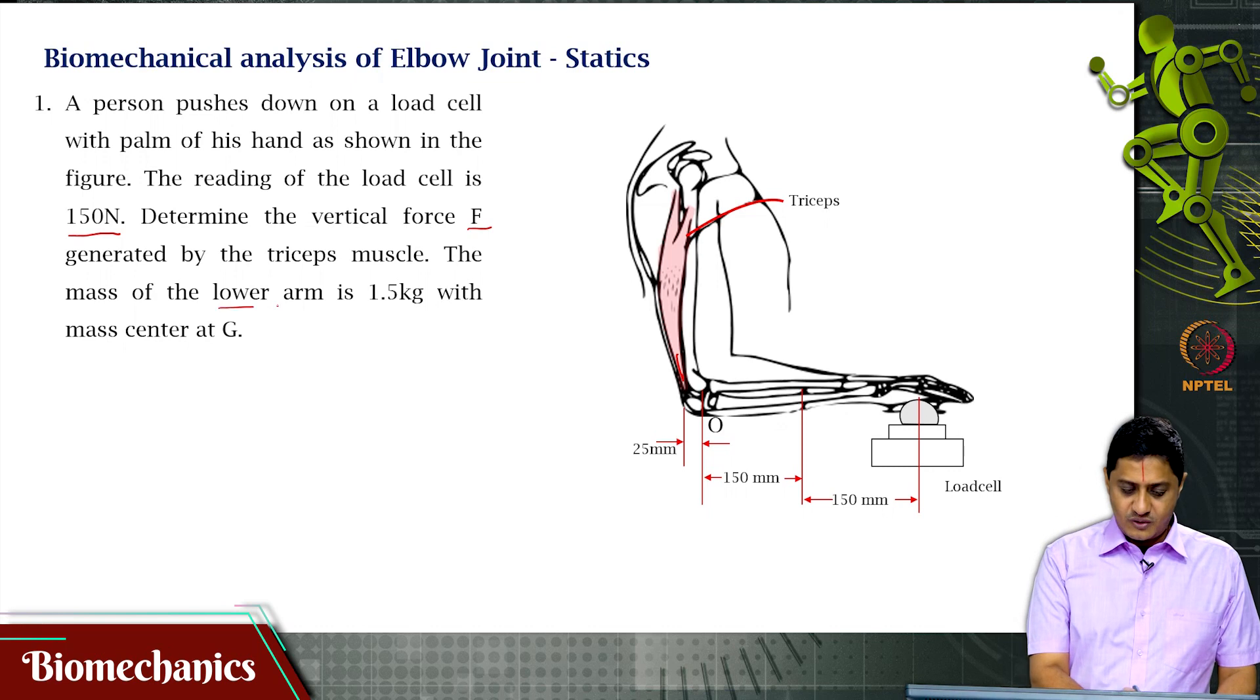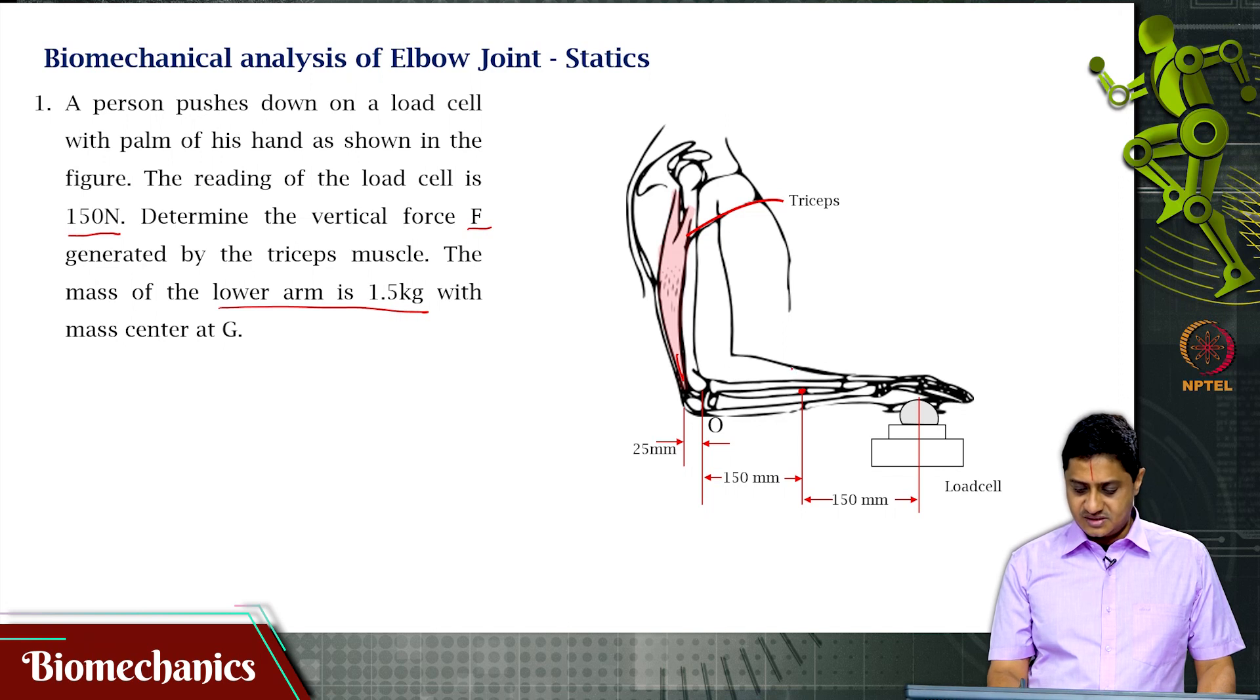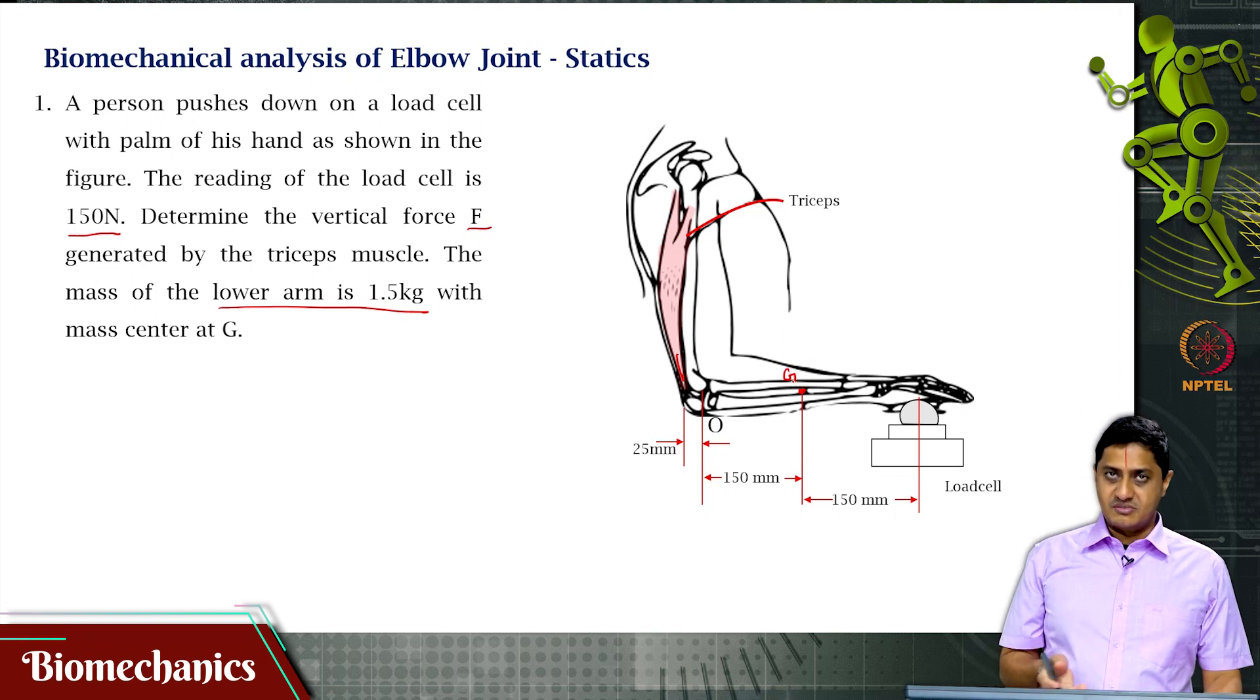The mass of the lower arm is 1.5 kg with the mass center at G. It is not given but that is the point G. I am marking it for you.